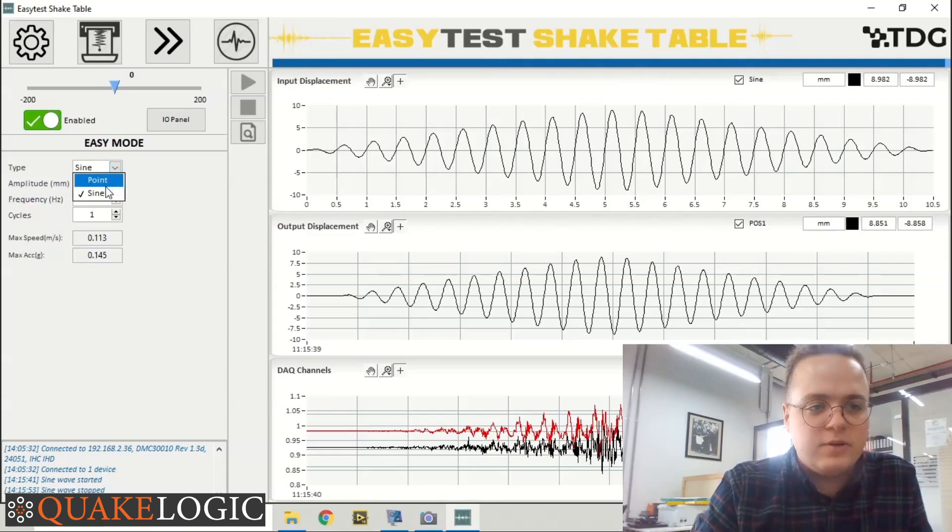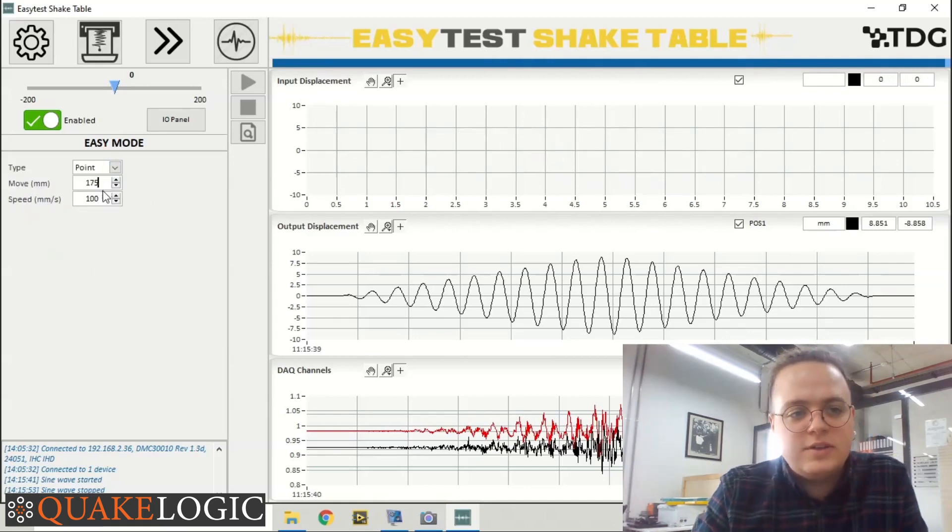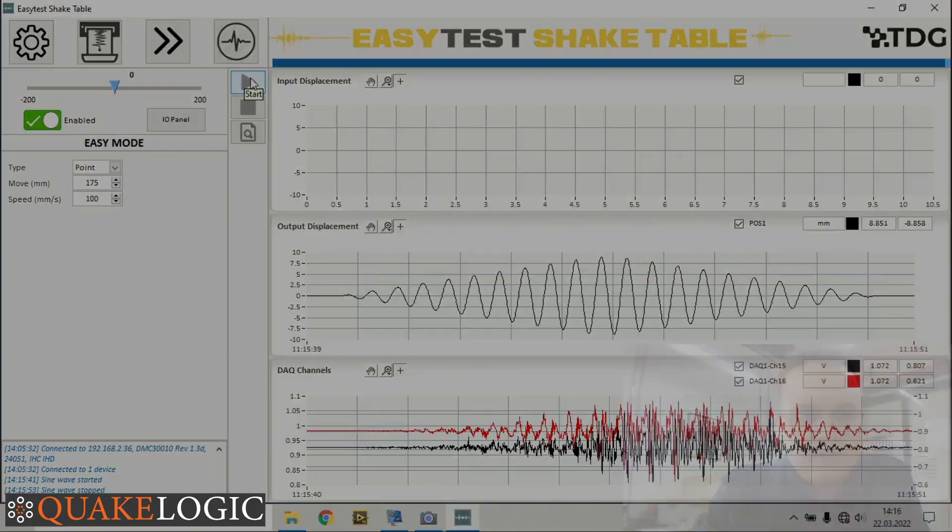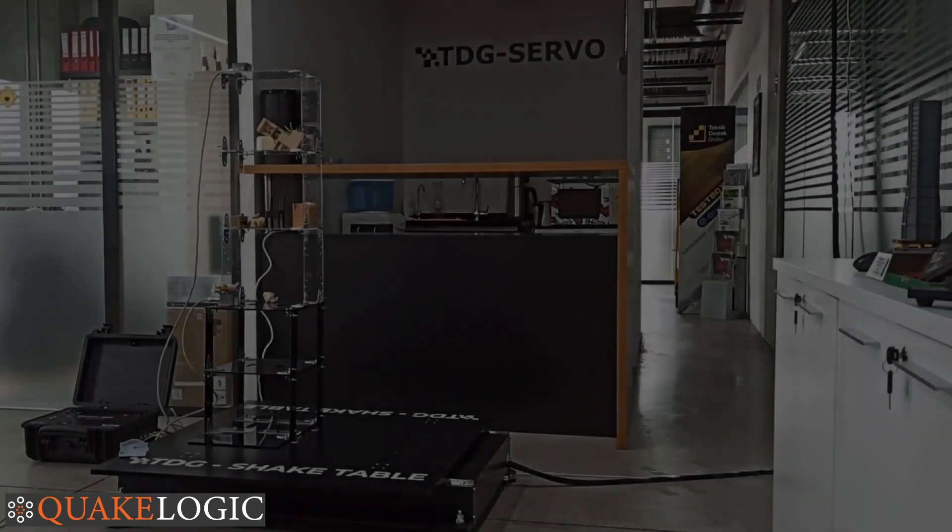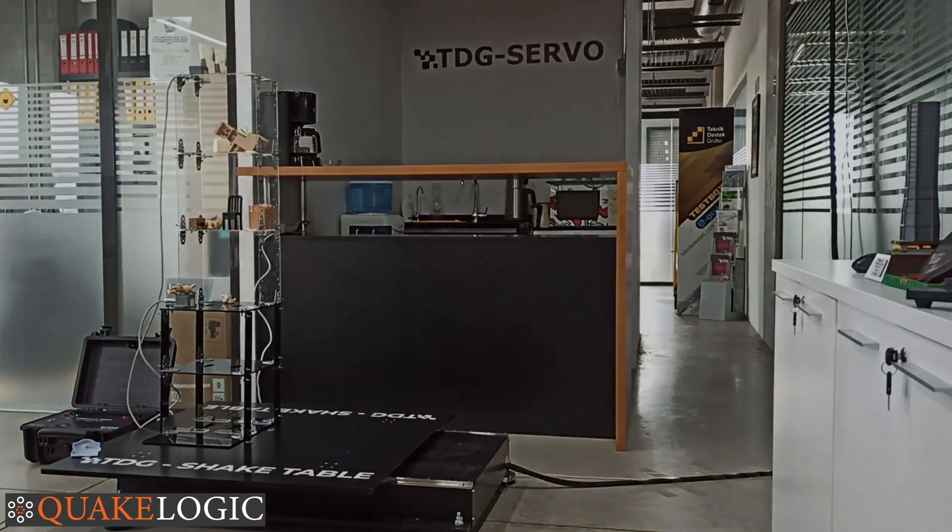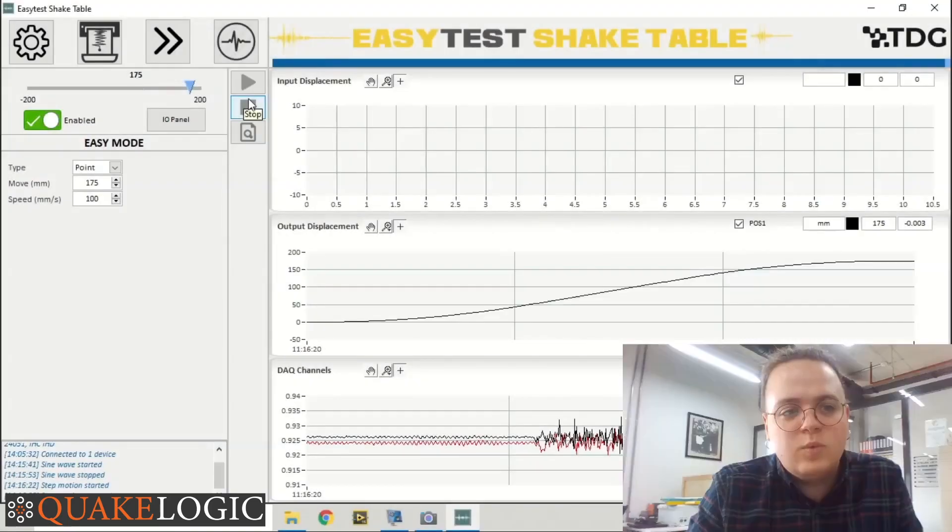Now let's try the Point mode. Let's say the device should go to 175 millimeters with the given speed. When we click on the start button, as you can see it has gone 175 millimeters to the left.